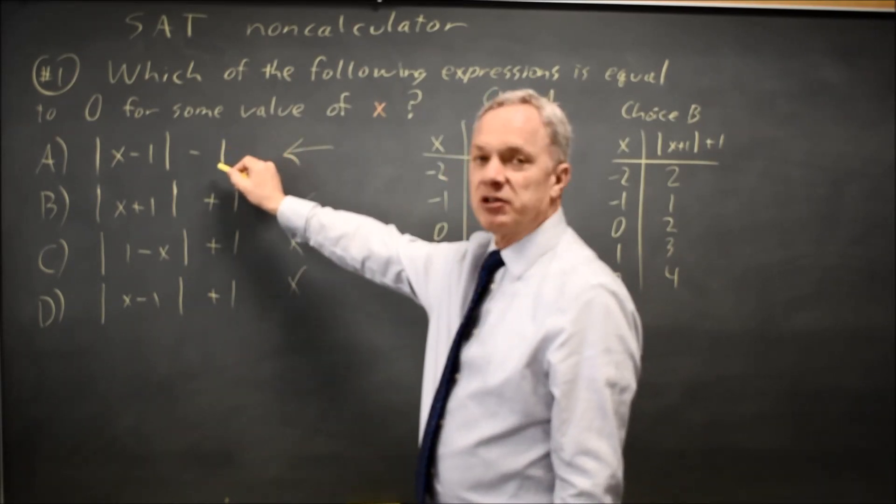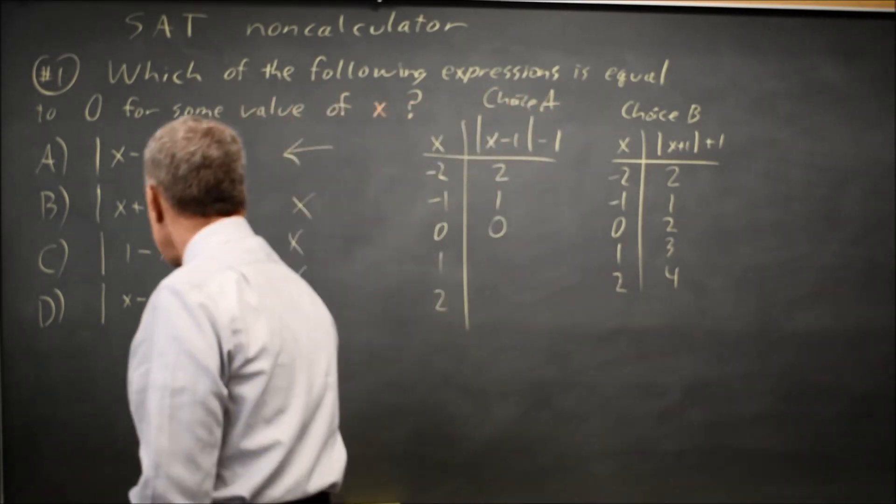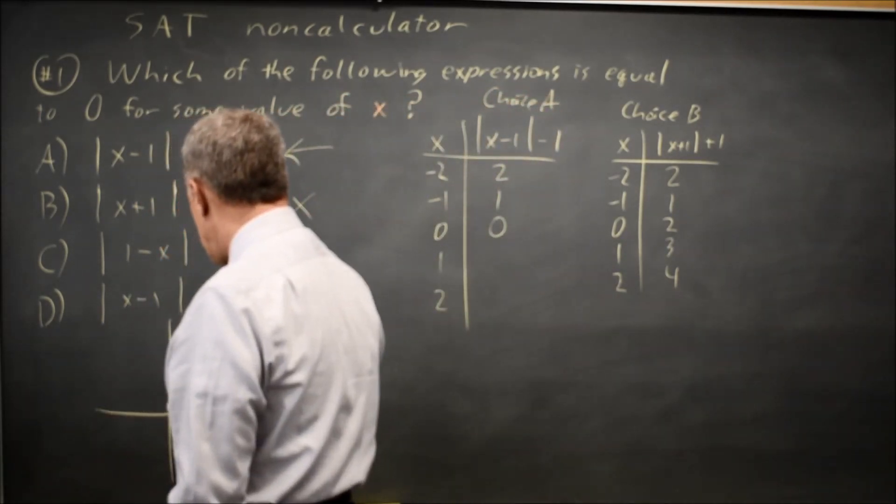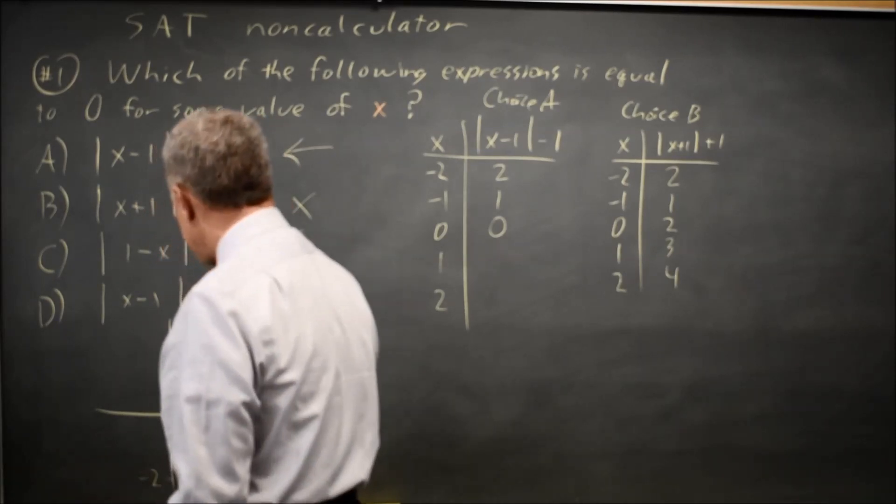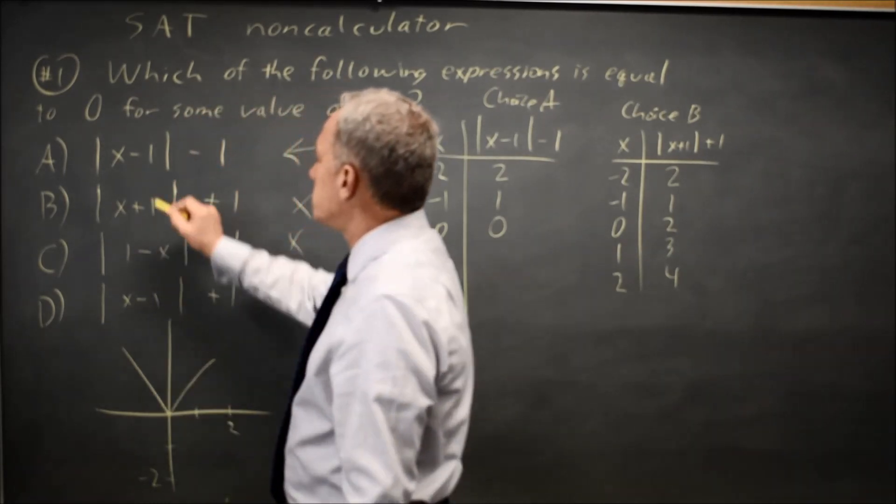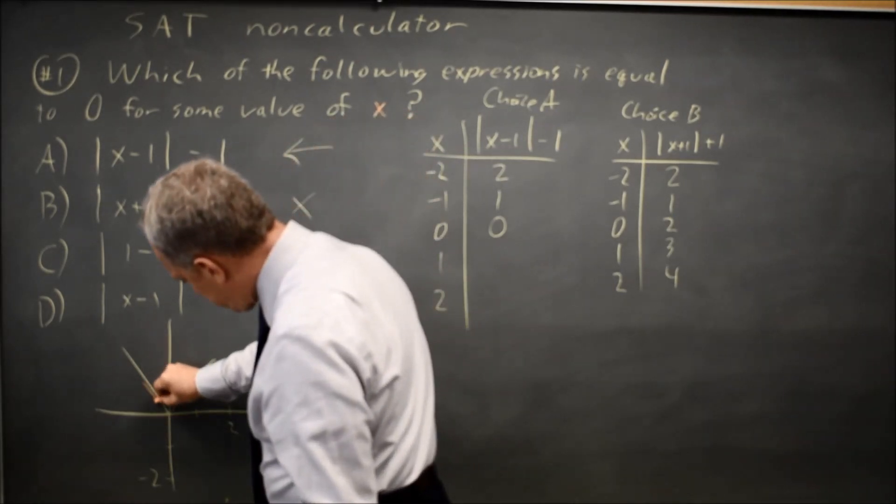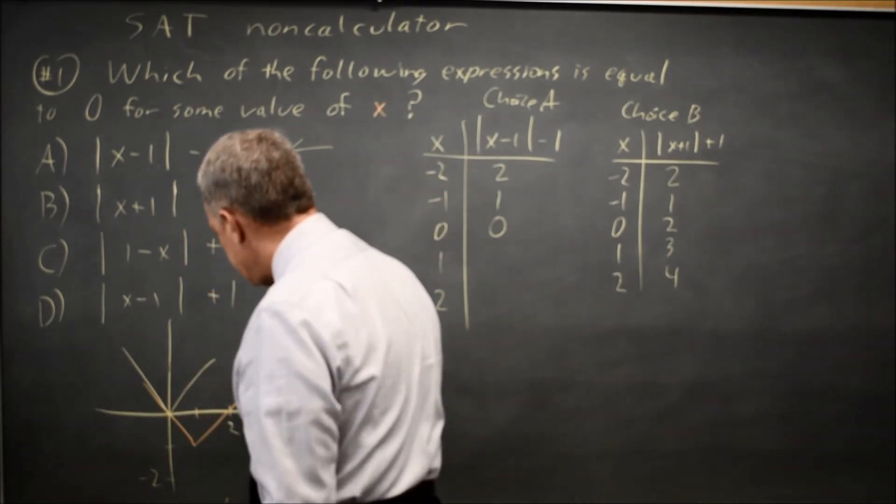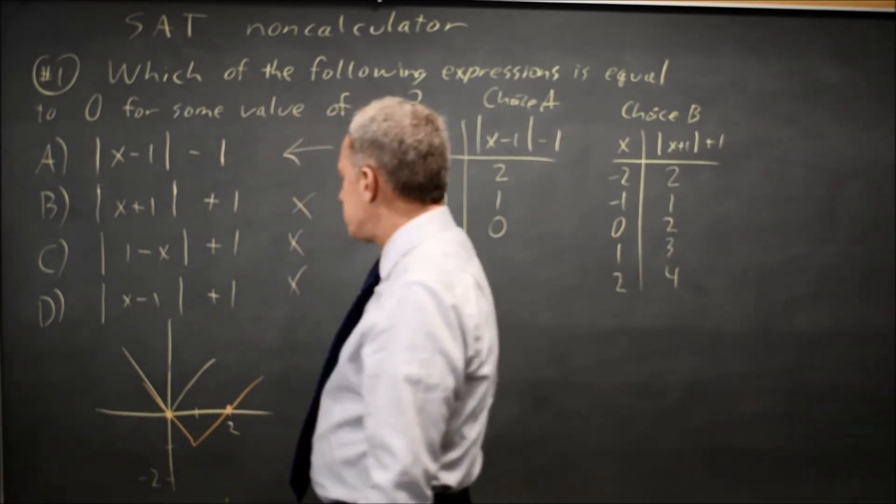When you shift an absolute value down by one, it touches the x-axis at two points. So at one, two, negative one, negative two, our normal absolute value is right here. When we shift to the right one and down one, our absolute value is now here.